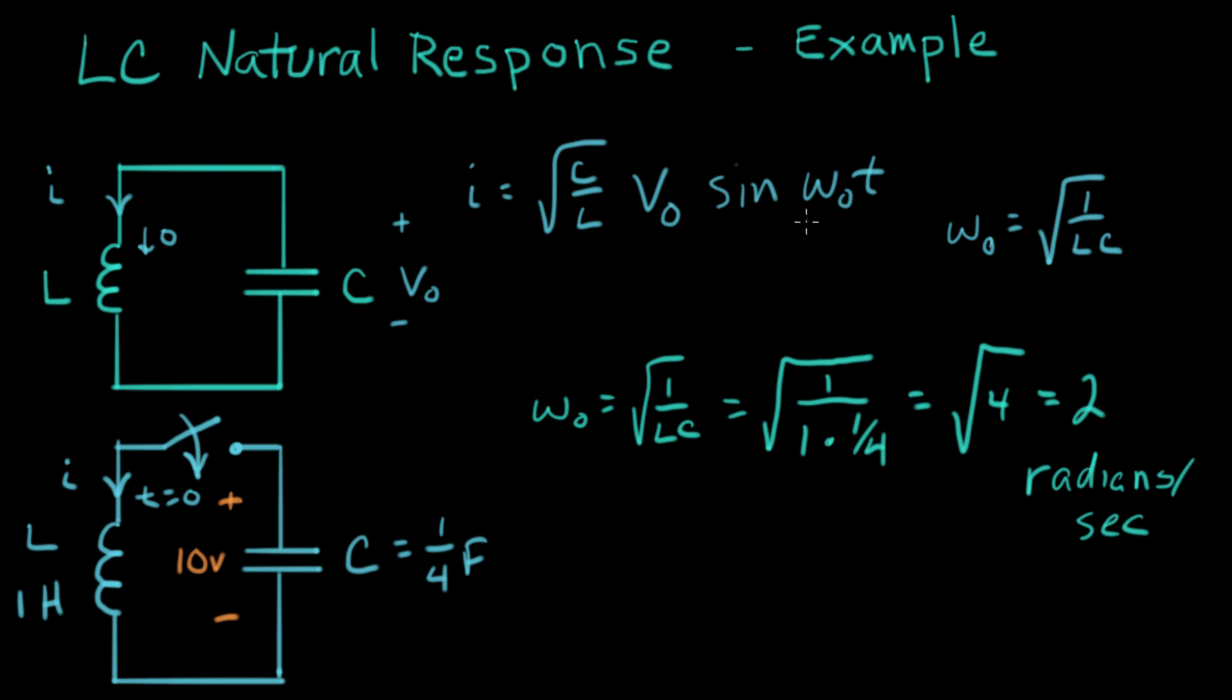We know the natural frequency right here, and now we can work out the rest of it. So we can just fill in I equals square root of C, which is one quarter farad, divided by one Henry, times V-naught. V-naught was 10 volts, times sine omega-naught T. Sine omega-naught is two T.